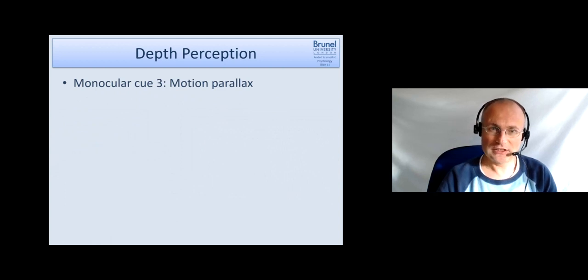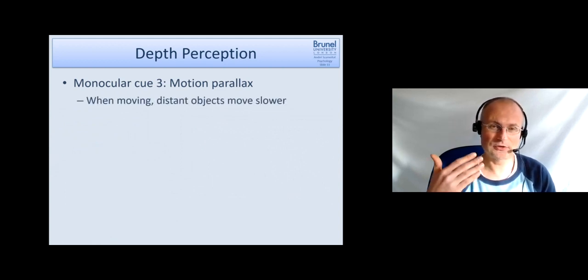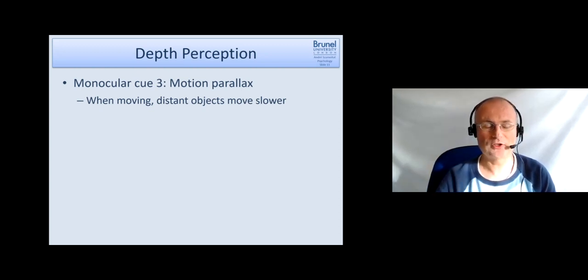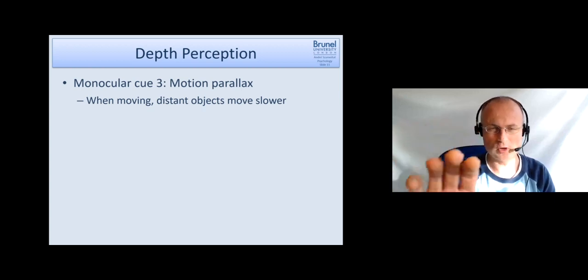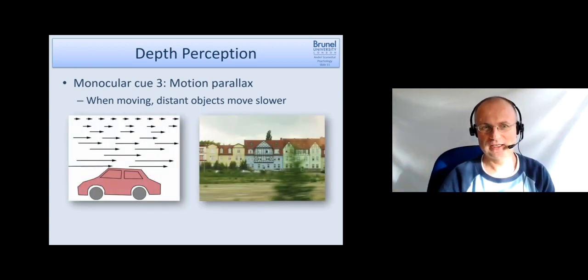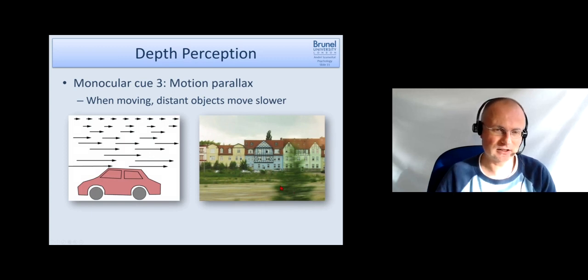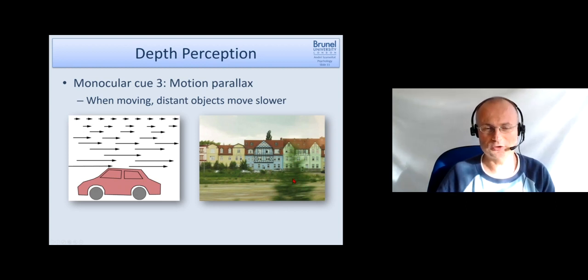A further cue is motion parallax, and this refers to moving. When we are moving, objects which are farther away from us move slower than objects which are close to us. You may know that when you are sitting in a car or in a train and you look out of the window, the things which are very close to you like a tree right next to the road just flies by in a blurry way. But the stuff which is further away like houses, they move much slower. So this is also used for depth perception.